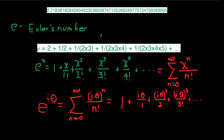It turns out that you can compute the value of e by summing the terms in this series: 2 plus 1 half plus 1 divided by 2 times 3, plus 1 divided by 2 times 3 times 4, plus 1 divided by 2 times 3 times 4 times 5. Notice that this is 2 factorial, this is 3 factorial, this is 4 factorial, this is 5 factorial, and so on. So we could compute the value of e by summing this series.